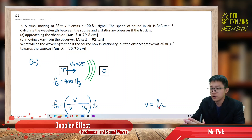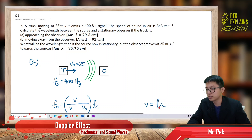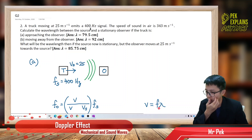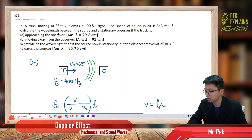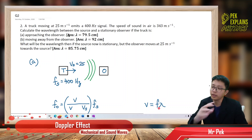Here's the second question for Doppler effect. A truck is moving at 25 meters per second, emits a 400 hertz signal. The speed of sound in air is 343 meters per second. Calculate the wavelength between the source and a stationary observer if the truck is approaching the observer, moving away from the observer, and so on.